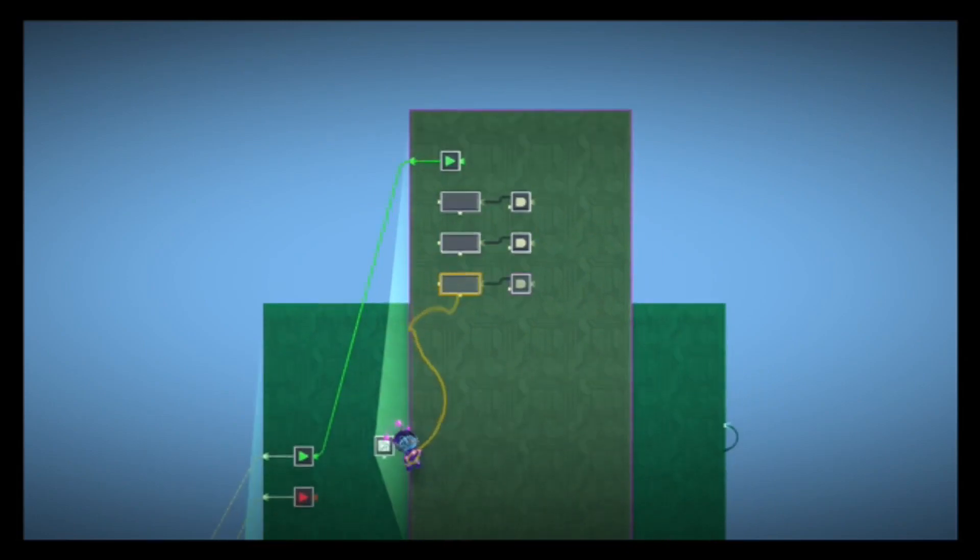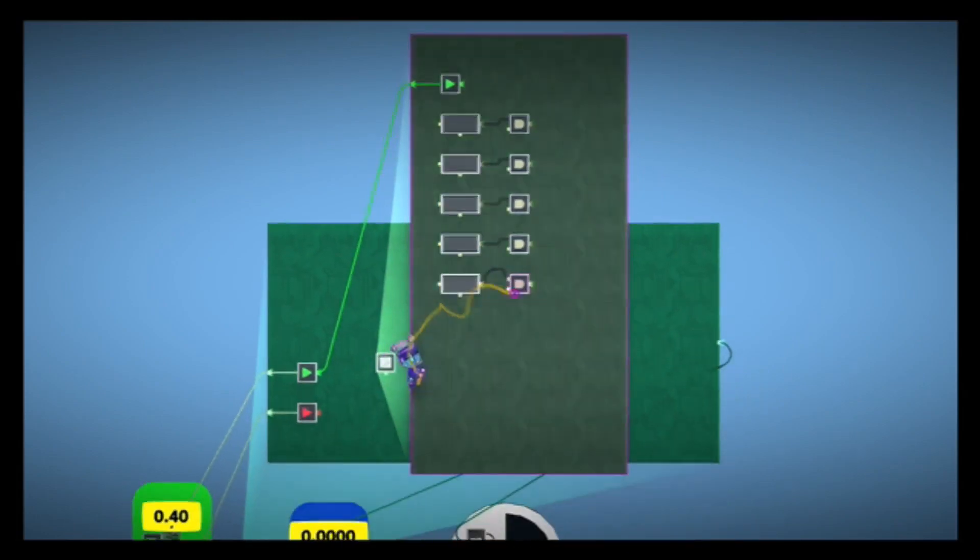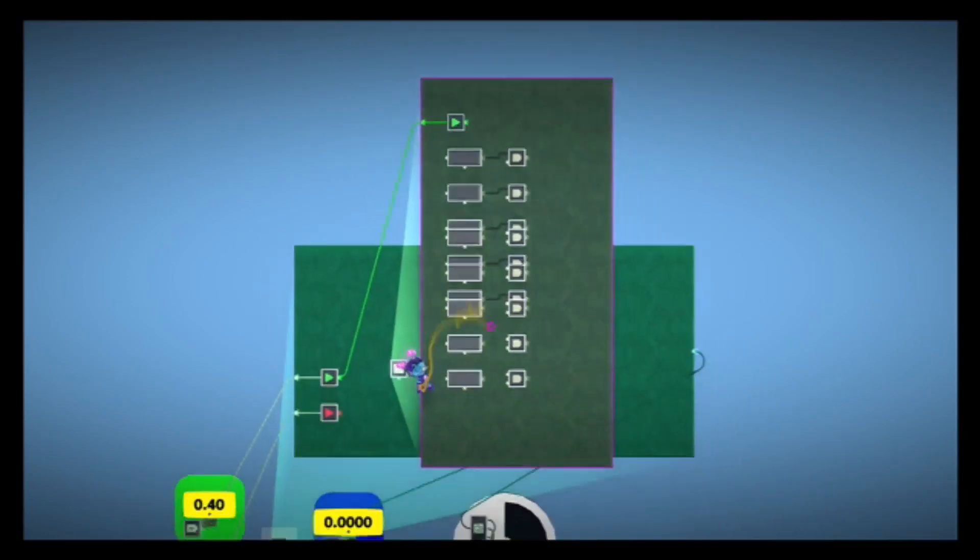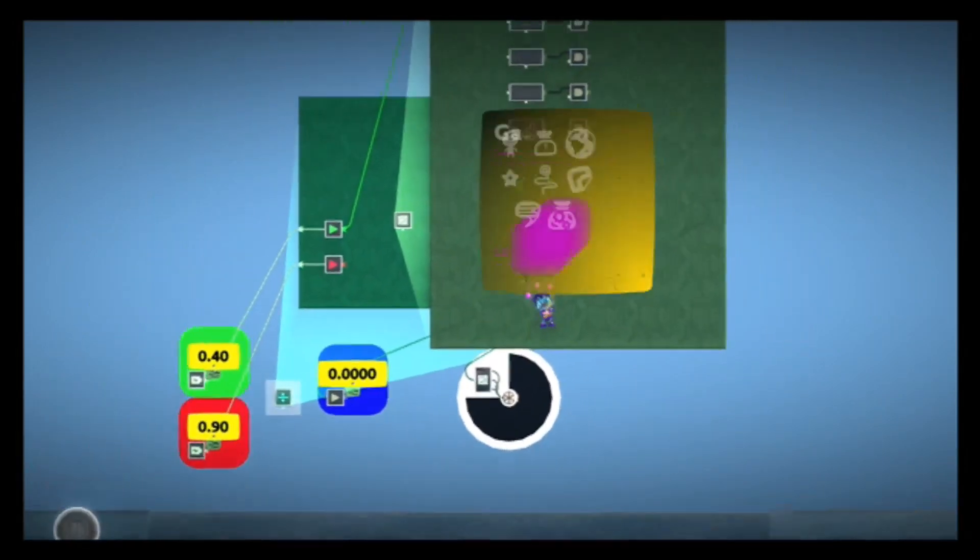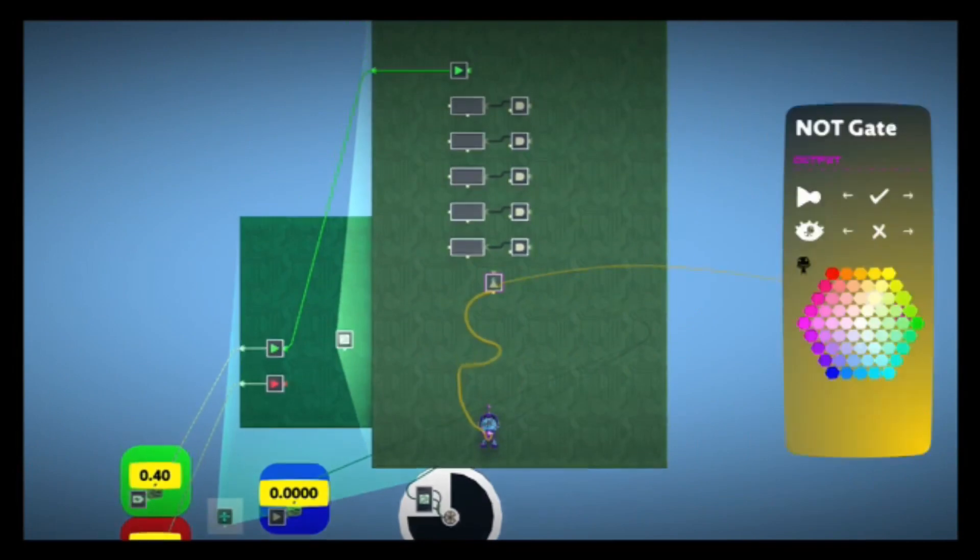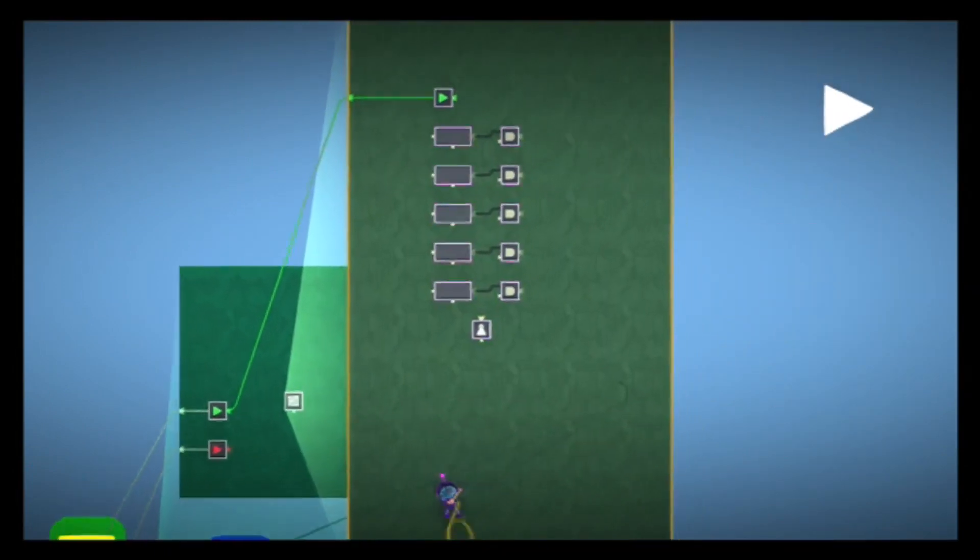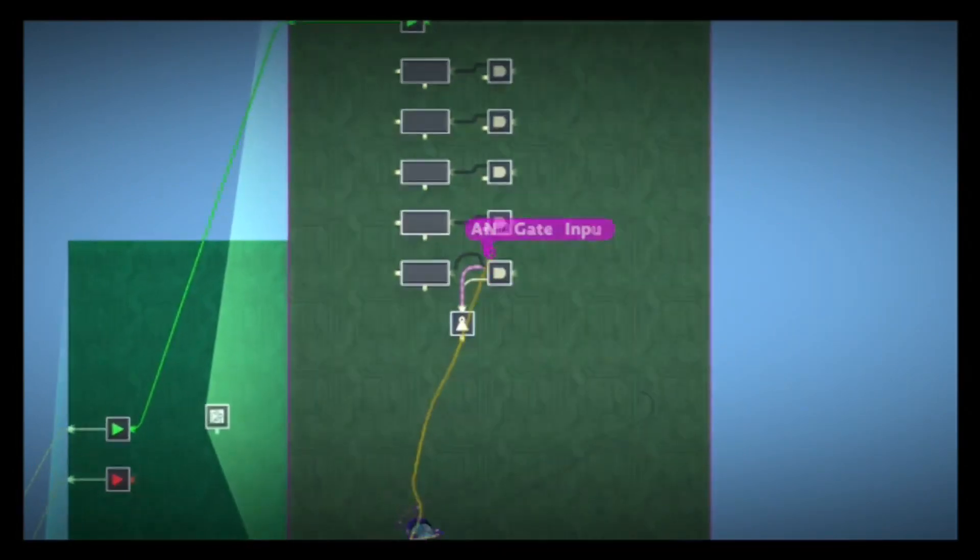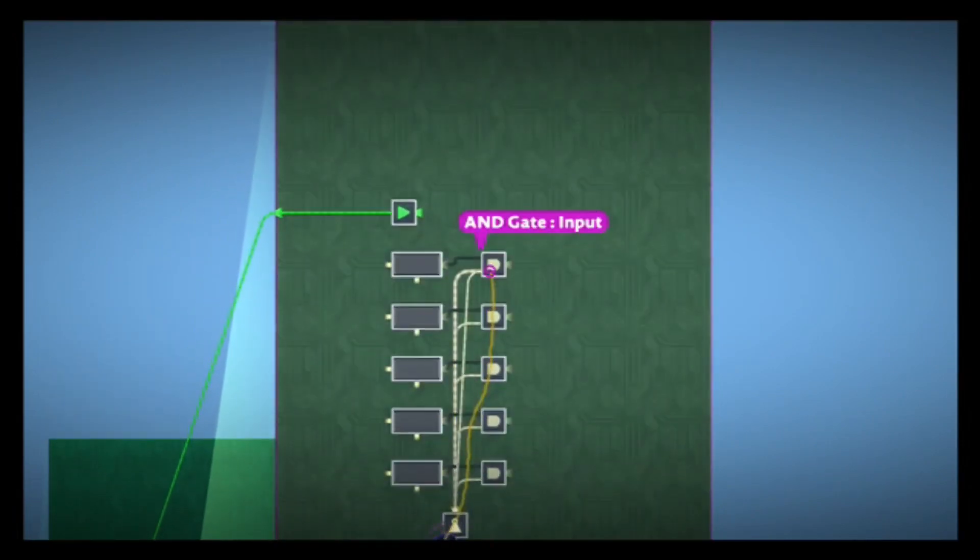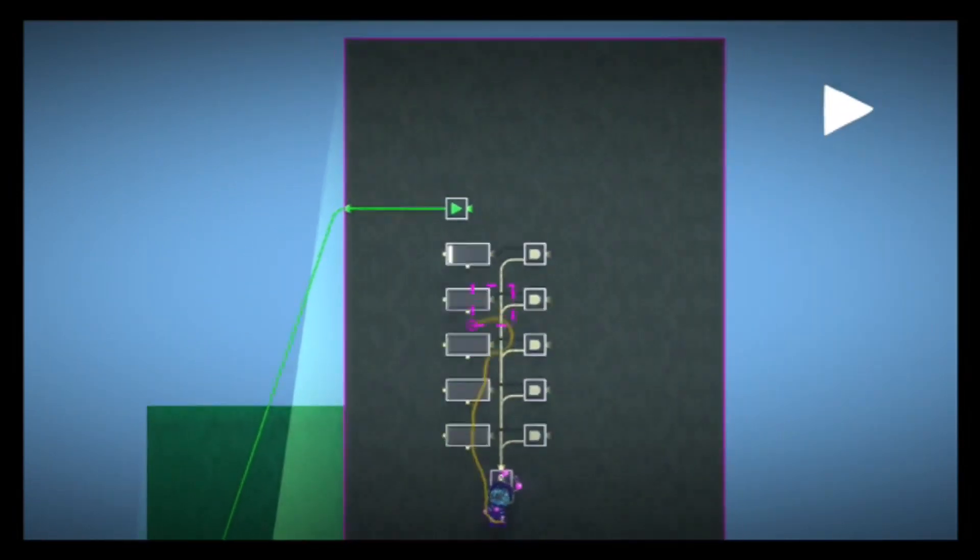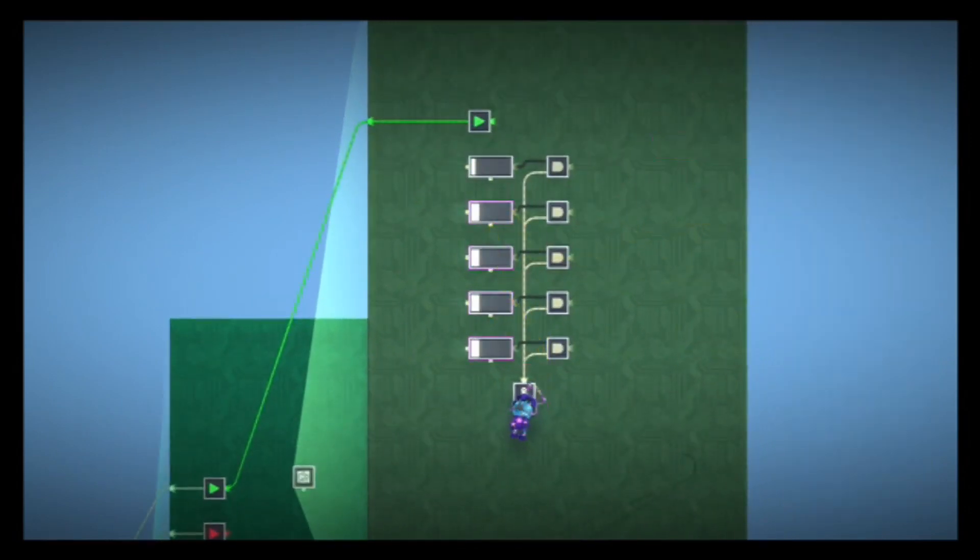So first thing I'm going to do is create a counter, and I'm going to wire the input of my counter to my AND gate, and I'm going to copy this 10 times. Now I'm going to have my denominator being wired into the bottom, or the second input of my AND gate. I'm going to use a NOT gate and wire all the second inputs of my AND gates together like this.